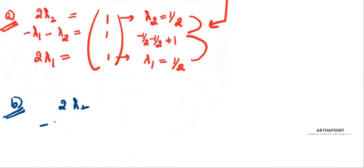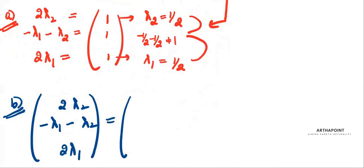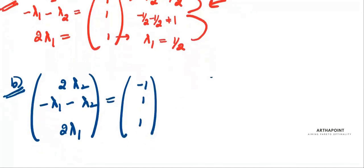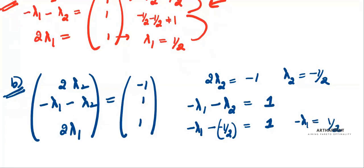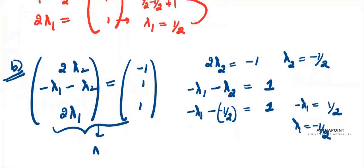Let's test the next vector (-1, 1, 1). From the first equation: 2λ₂ = -1, so λ₂ = -½. From the second equation: -λ₁ - (-½) = 1, so -λ₁ + ½ = 1, giving λ₁ = -½. But the third equation requires 2λ₁ = 1, meaning λ₁ = ½. This contradicts λ₁ = -½, so (-1,1,1) does not satisfy the equations.